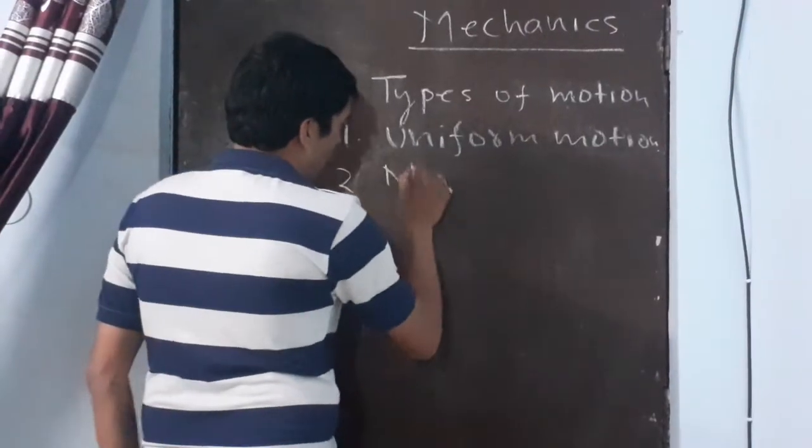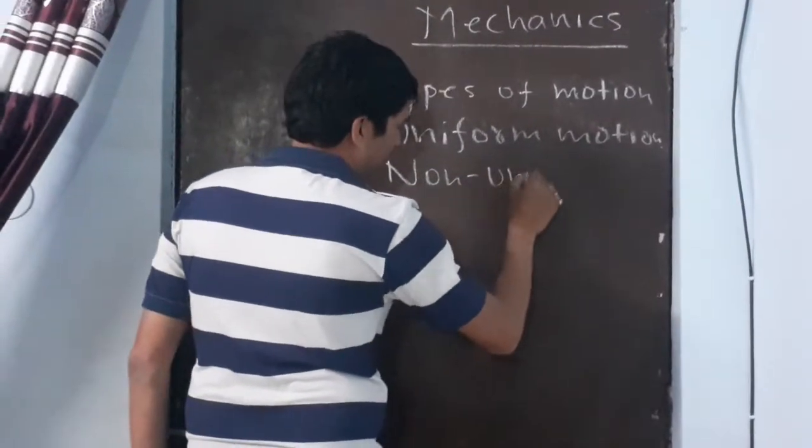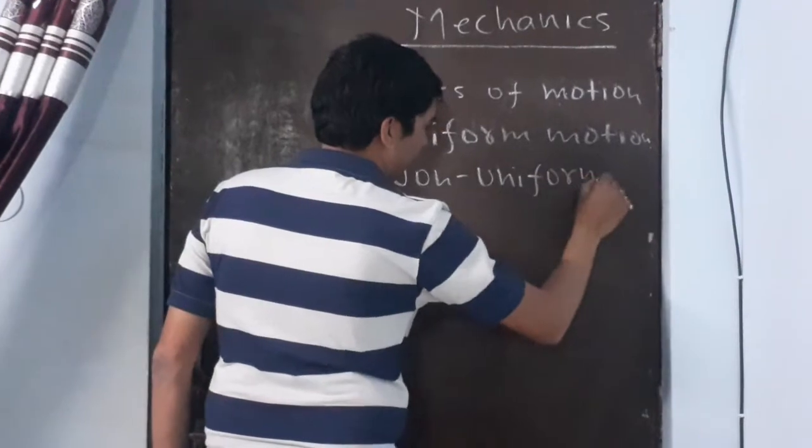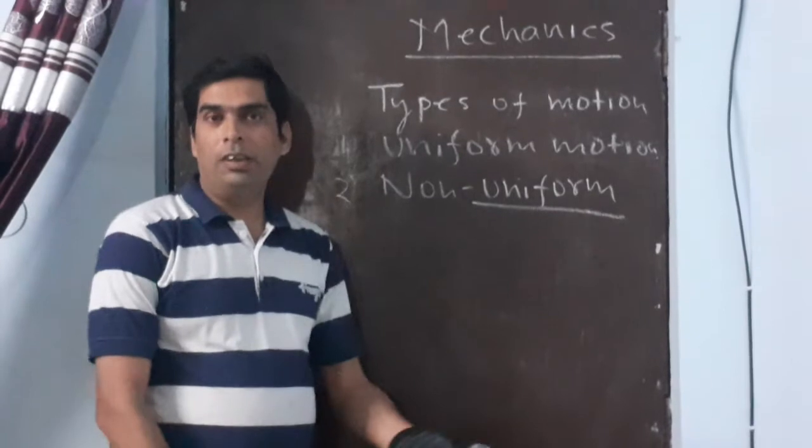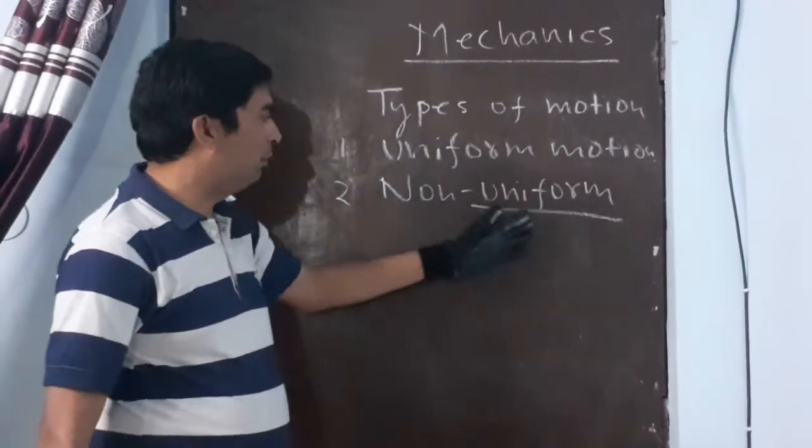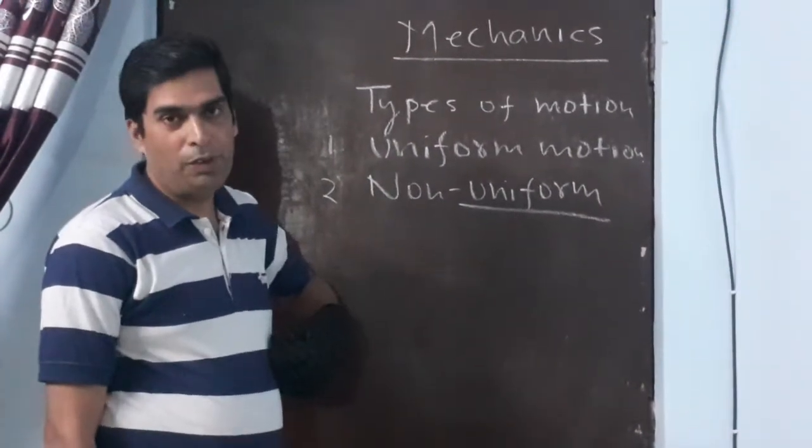Second is non-uniform motion. When a body does not cover equal distance in equal time intervals, then this type of motion is termed as non-uniform motion.